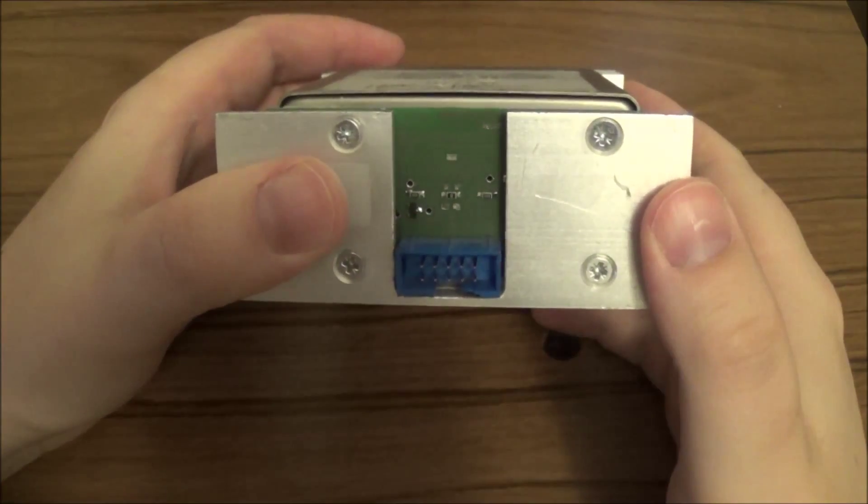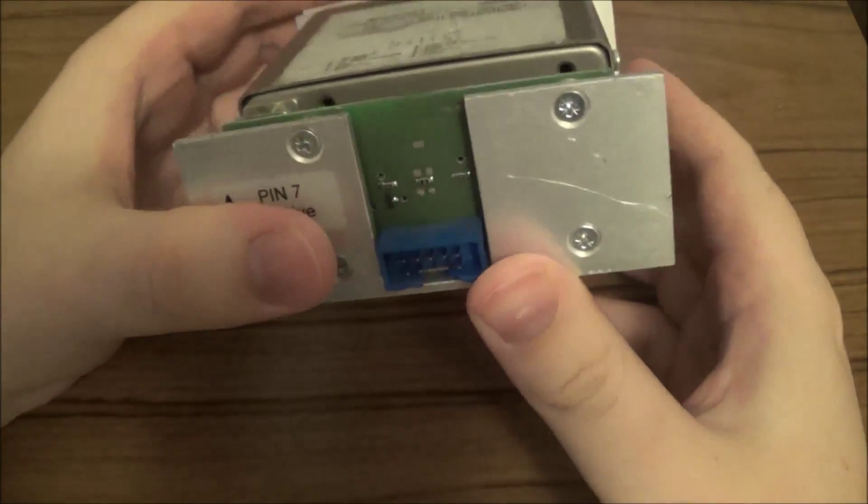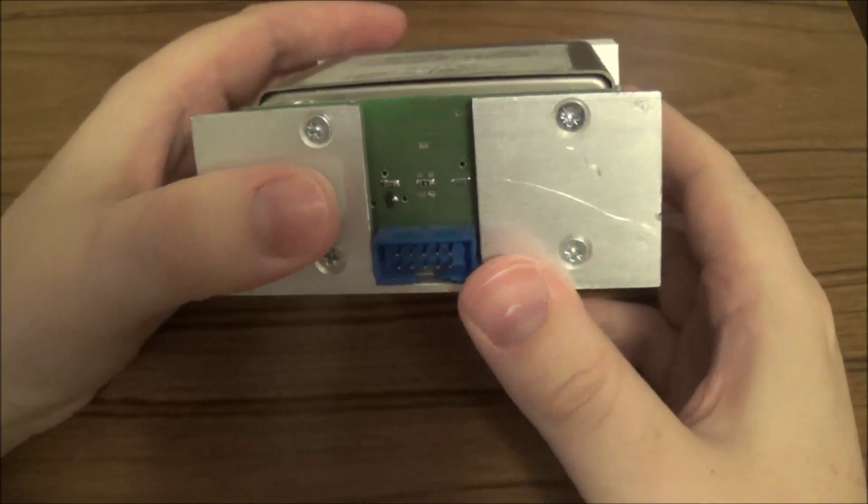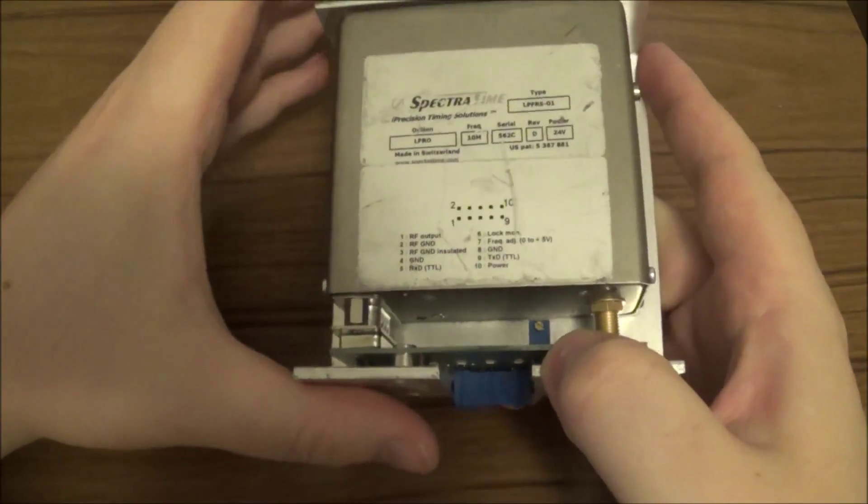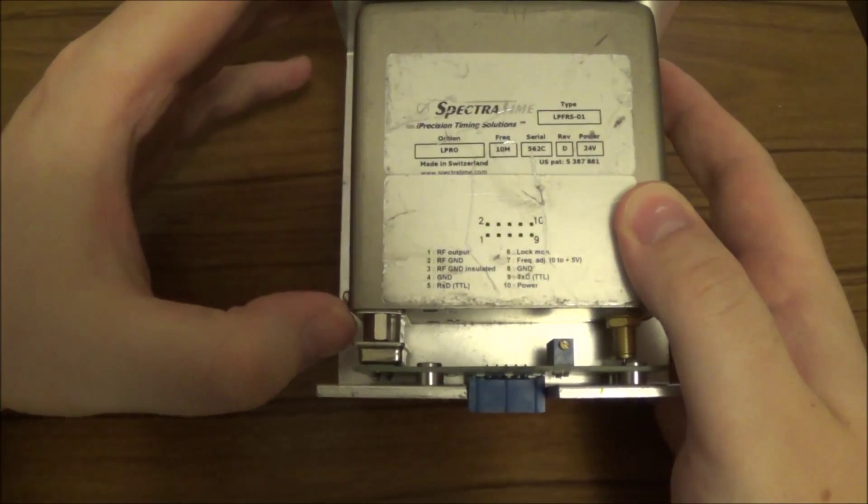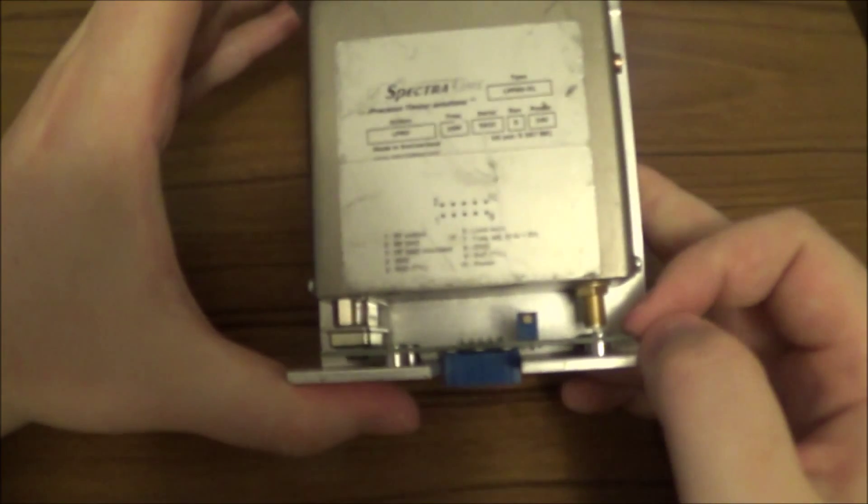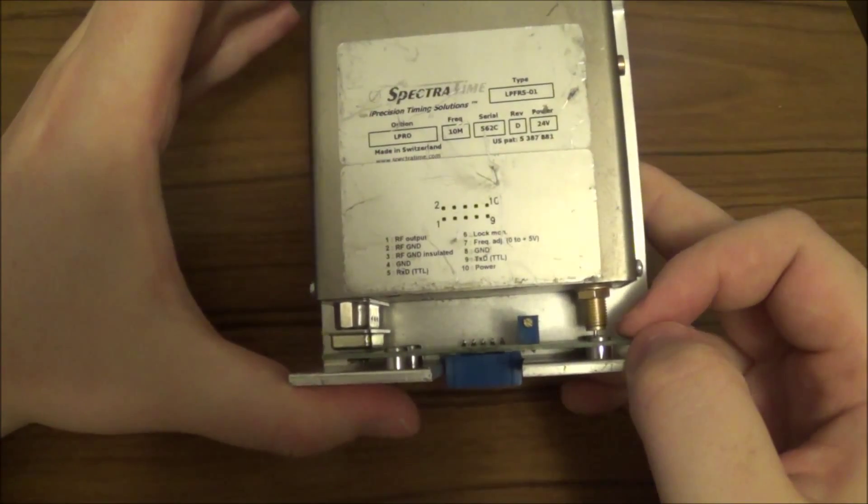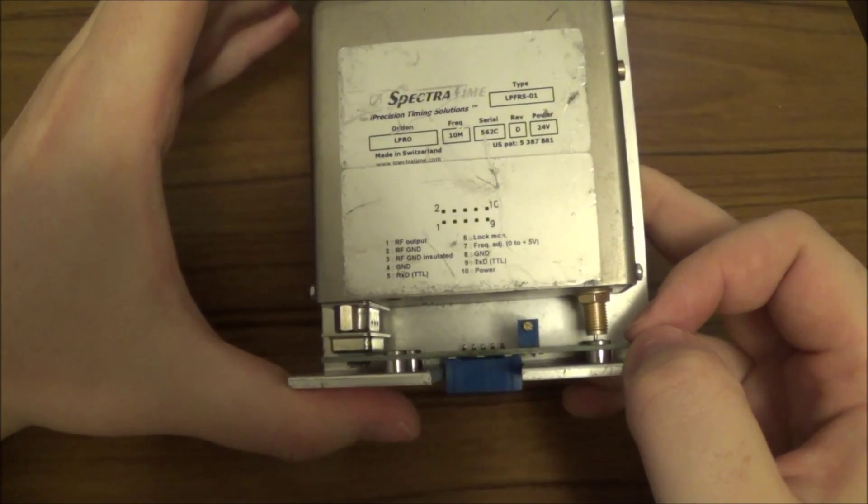It's got this board that breaks out the connections to this 10 pin ribbon cable connection. The board has some passive components and what looks like a transistor here on it. It's got a trim pot for adjusting the frequency and it connects to the main unit via this 9 pin D sub connector and a wire going into the coax connector here. It kind of looks like a hack job but this is actually how they sell it.